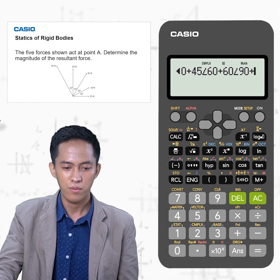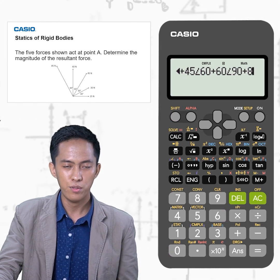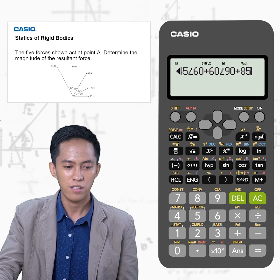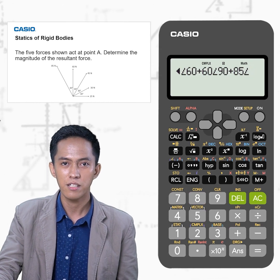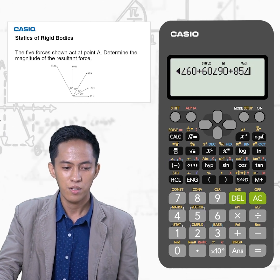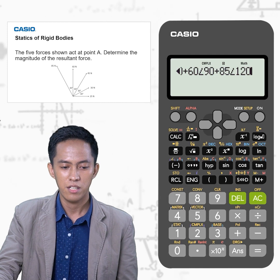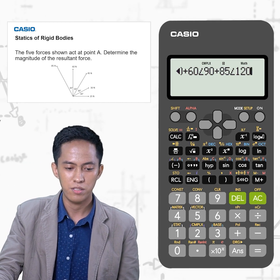Plus 85N Shift-Angle 120 degrees. Then press Equals.